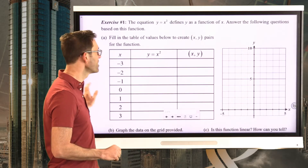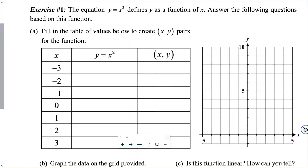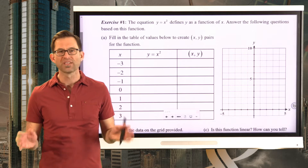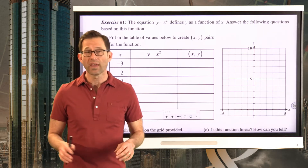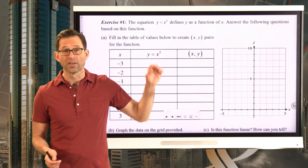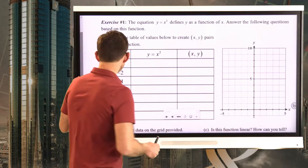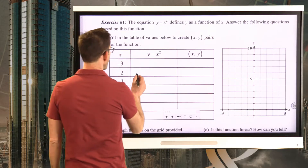The equation y equals x squared defines y as a function of x. We want to graph this and see what it looks like. If all the points end up lying in a straight line, then it isn't a non-linear function. Creating points from this function rule are pretty easy — all I'm going to do is take my input and square it.